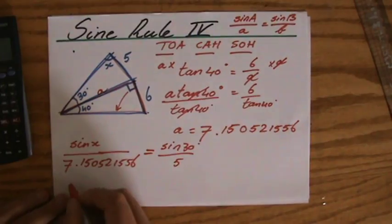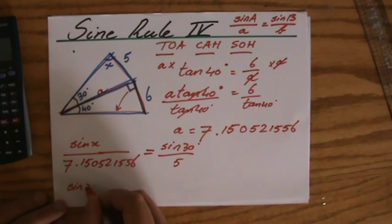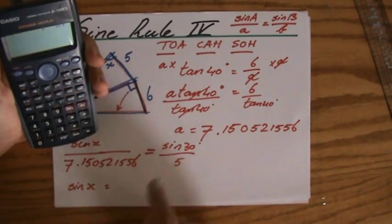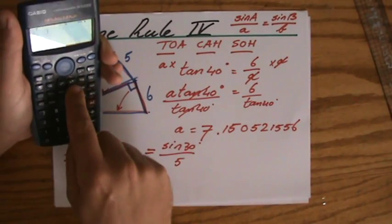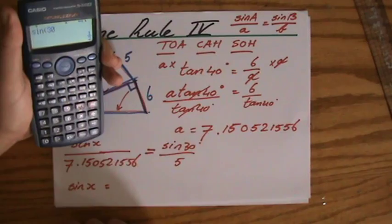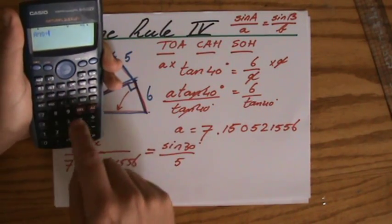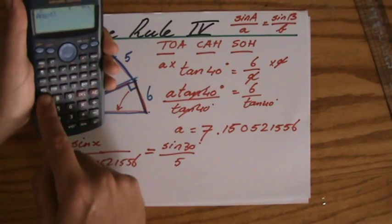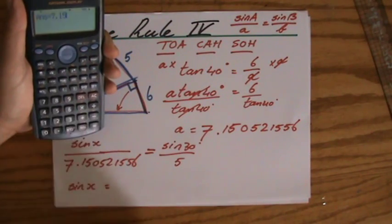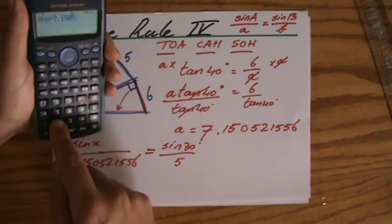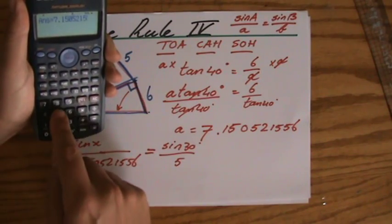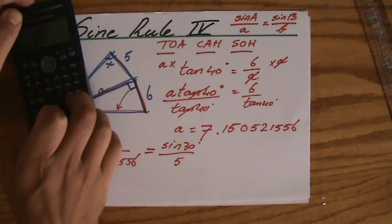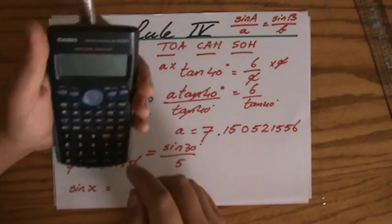You see that? So the sine of X equals - and I'm going to grab my calculator because I don't have a lot of space left. I'm going to put in the sine of 13, equals, divided by 5, equals, times it by 7.150521556, equals. I hope you understand what I've just done. Oh, and it's gone now, I have to do it again, sorry.